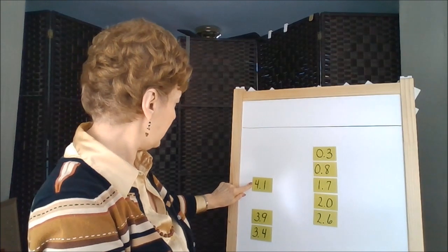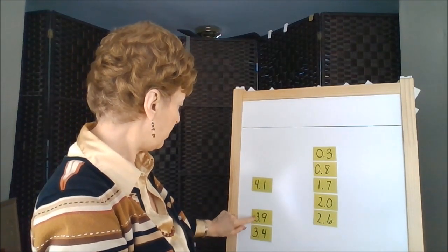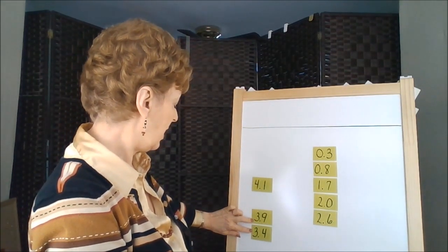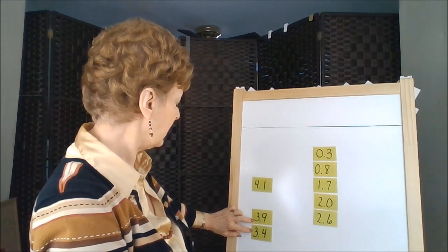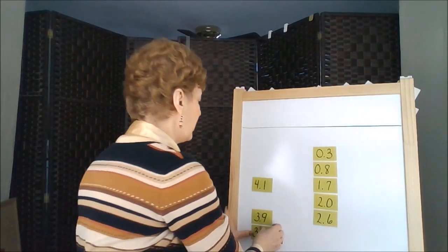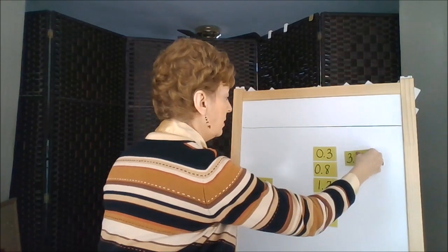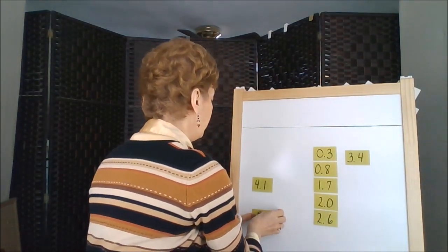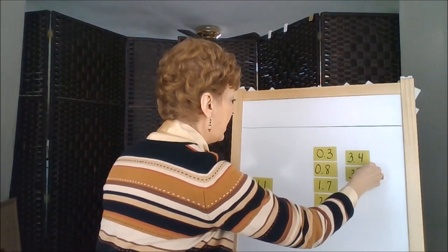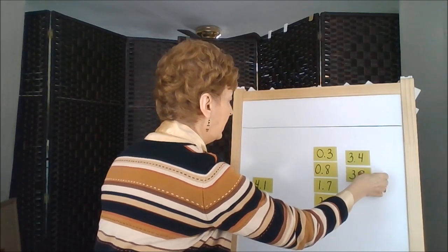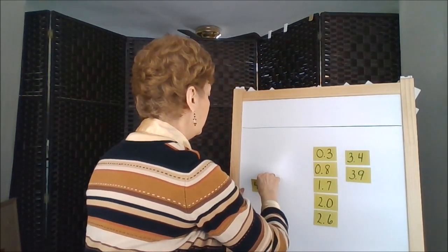Going back to our data set we have a four and two threes, so the threes are next. We're going to look at second numbers. Four is smaller than nine. Three point four, three point nine, and finally the four point one.